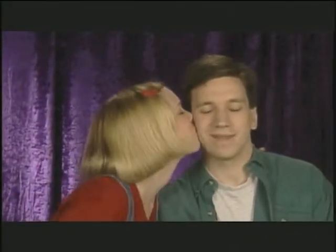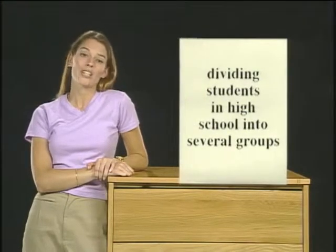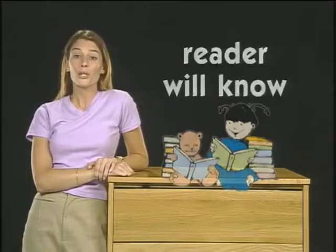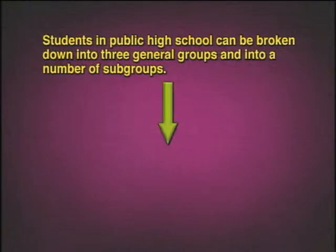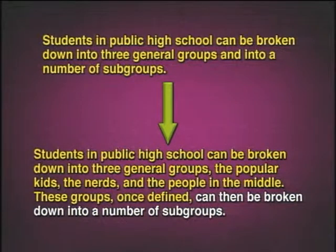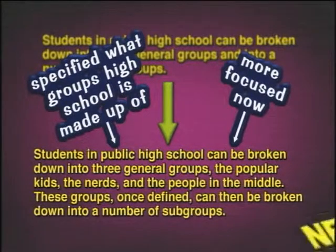Sam suggested that Nathan state each of the high school groups in his thesis statement. So Nathan needs to make his thesis statement more specific. His paper will be dividing students in high school into several groups, so he decides to state each of them. That way, his reader will know that the supporting paragraphs will describe these different groups. The statement now reads: 'Students in public high school can be broken down into three general groups: the popular kids, the nerds, and the people in the middle. These groups, once defined, can then be broken down into a number of subgroups.' He's now specified what groups high school is made up of — it's more focused. This is Nathan's new working thesis.